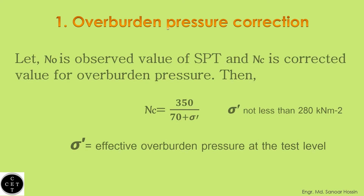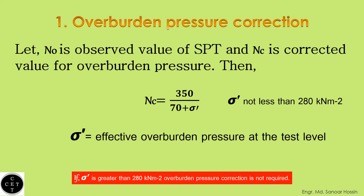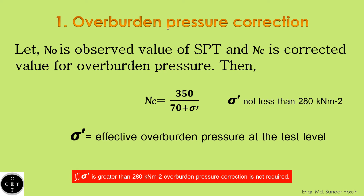Let N0 be the observed value of SPT and Nc be the corrected value for overburden pressure. Then, Nc equals 350 divided by (70 plus sigma prime), where sigma prime is not less than 280 kN per meter square. Sigma prime equals the effective overburden pressure at the test level. If sigma prime is greater than 280 kN per meter square, overburden pressure correction is not required.